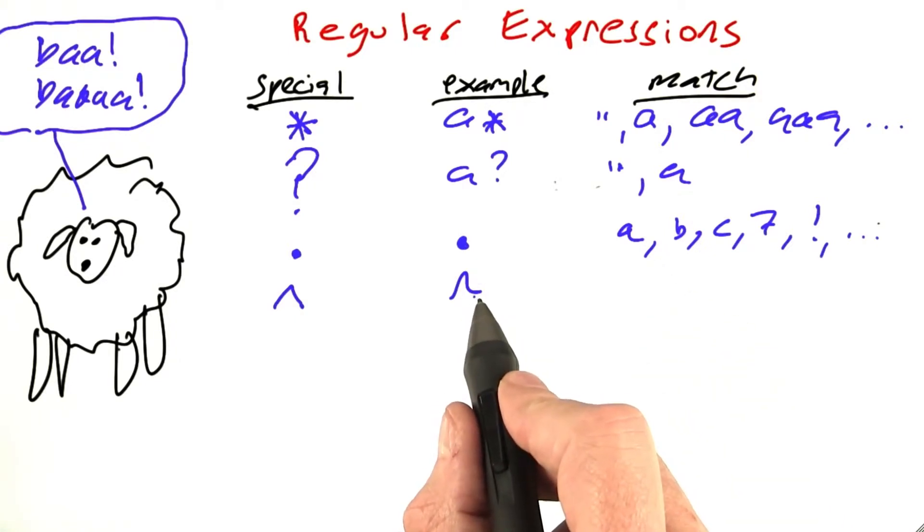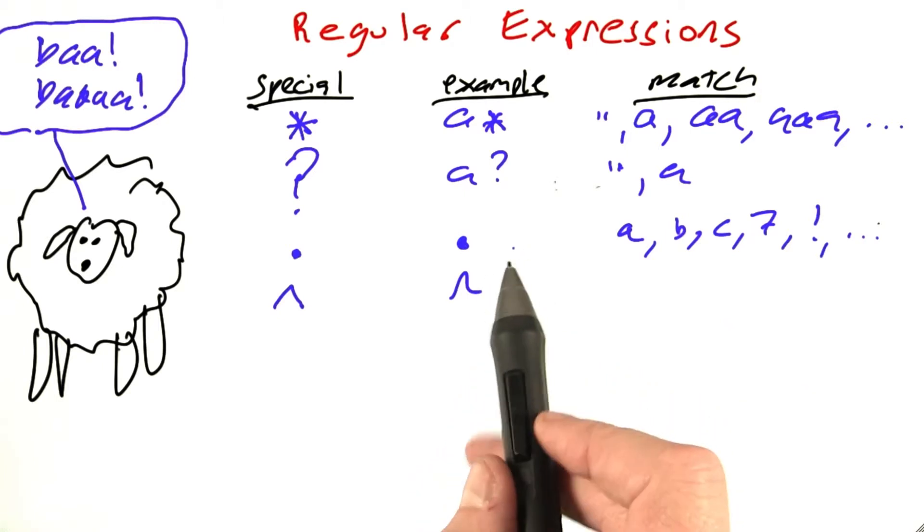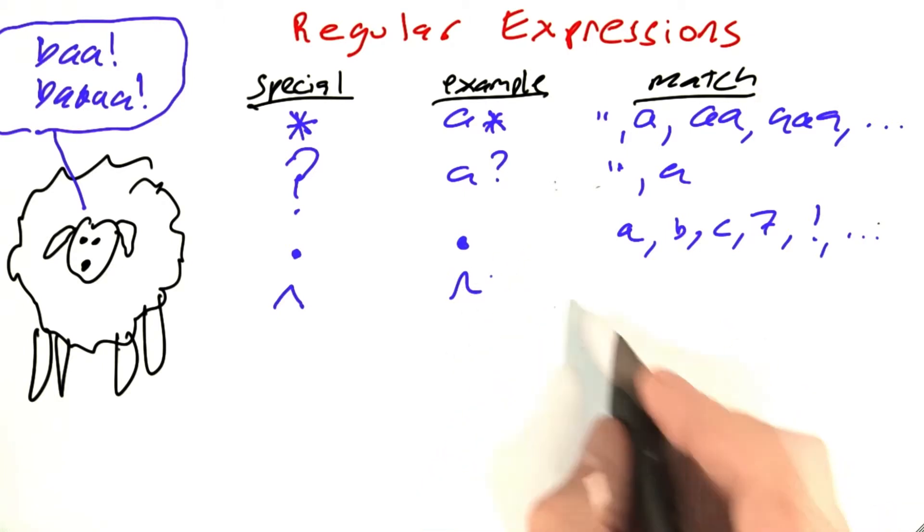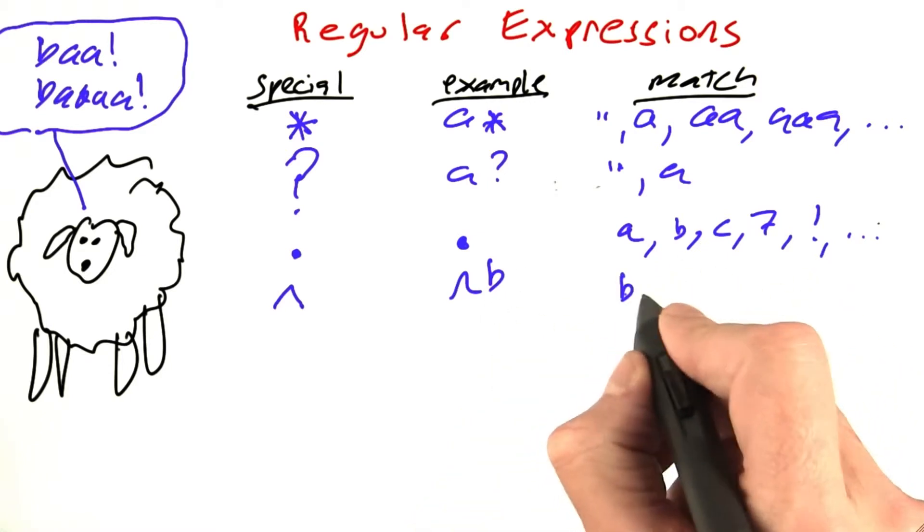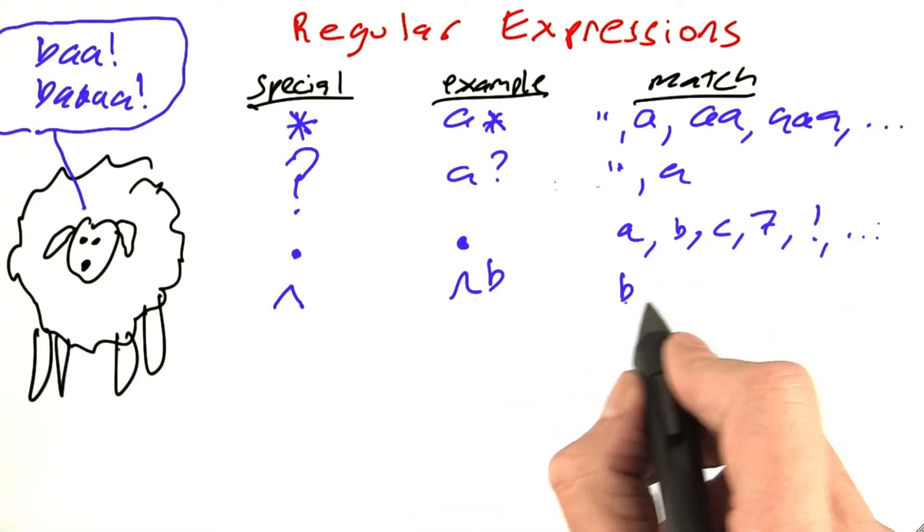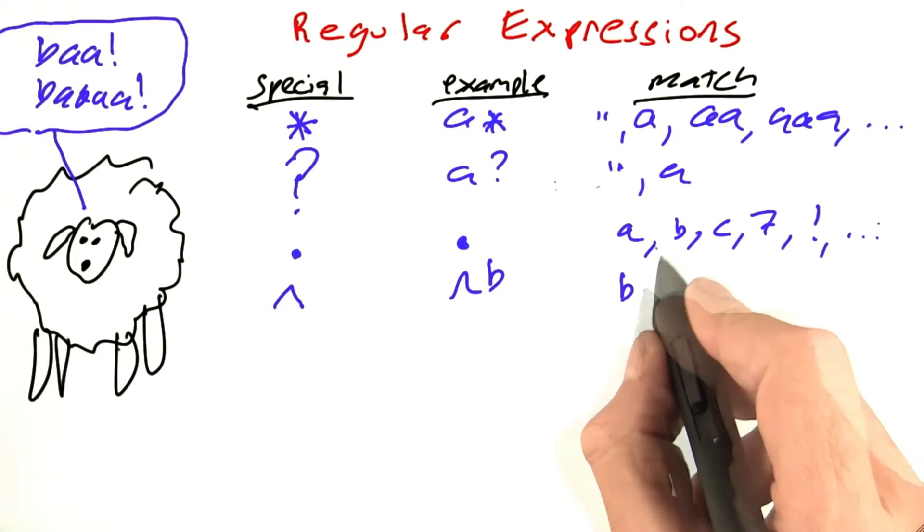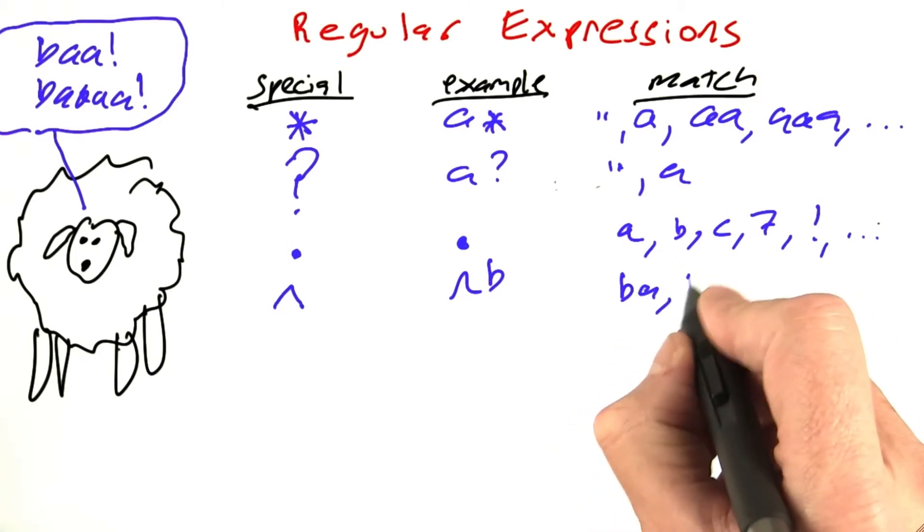And so it's not much use by itself, but in conjunction with another character, it can limit the match to the beginning. So, for example, up arrow B matches against any string that starts with a B, like BA, or BB,